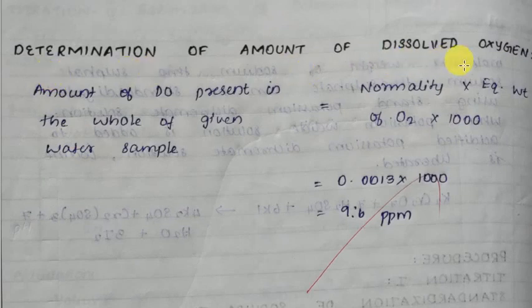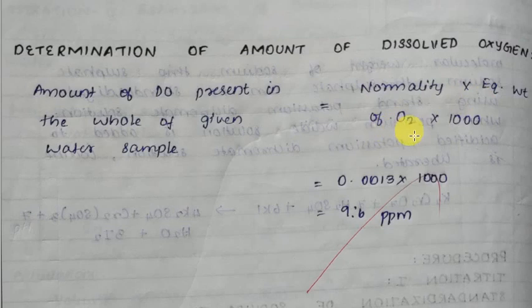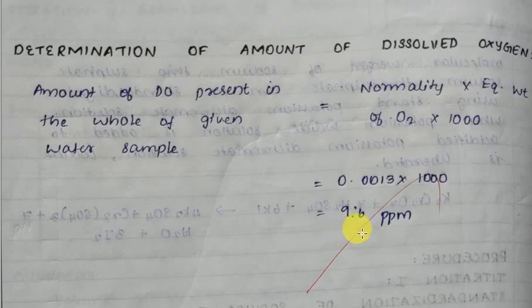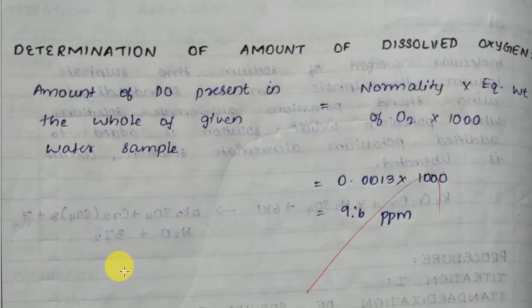Determination of the amount of dissolved oxygen: Amount of dissolved oxygen present in the water sample = normality × 8 × 1000 = 0.0013 × 8 × 1000 = 9.6 mg per liter (PPM). So the dissolved oxygen present in the given water sample is 9.6 mg per liter.